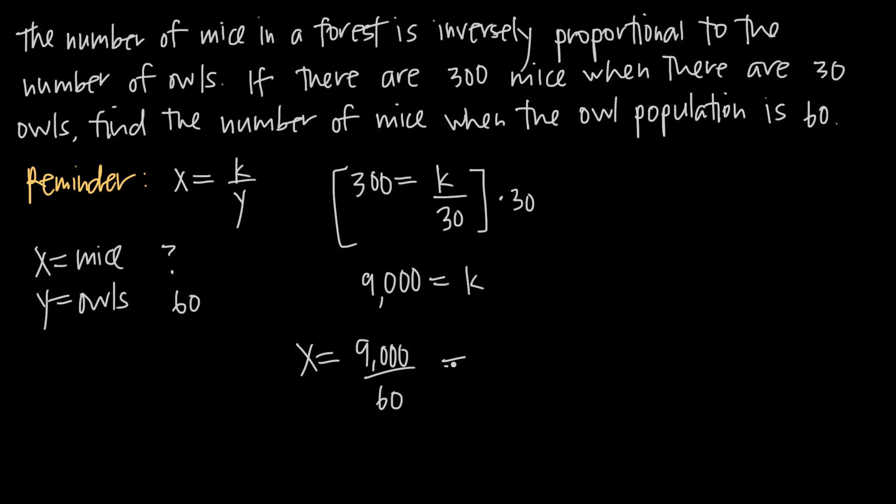So we're trying to find the number of mice in the forest when the owl population is at 60. We just need to reduce our fraction so we're going to get 900 over 6 is going to be the same as 300 over 2 or x equals 150. So there are going to be 150 mice when there are 60 owls.